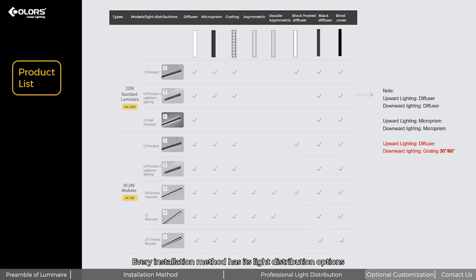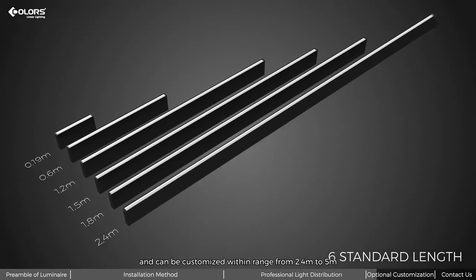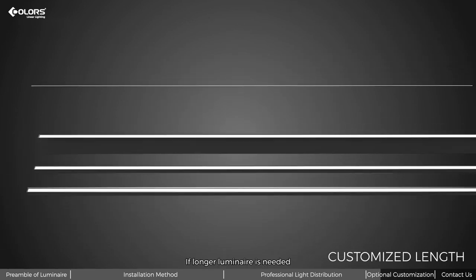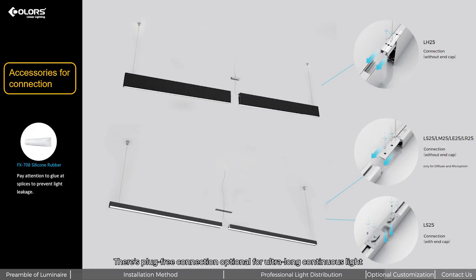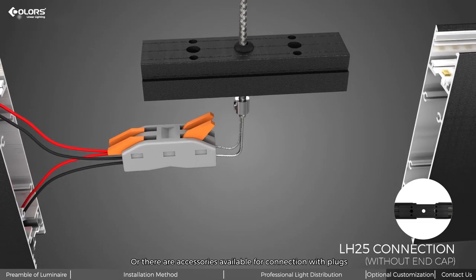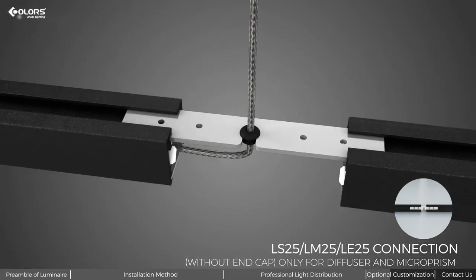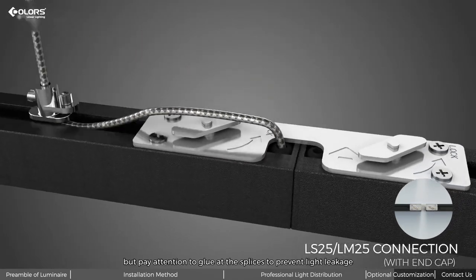Every installation method has its light distribution options, but pay attention to grating type of upward and downward lighting. The upward lighting corresponds to optical diffuser. Every luminaire has its standard lens for option and can be customized within range from 0.4 meters to 5 meters. If longer luminaire is needed, ultra-long connection for any lens is attainable. There's plug-free connection optional for ultra-long continuous light, where there are accessories available for connection with plugs. But pay attention to glue at the splices to prevent light leakage.